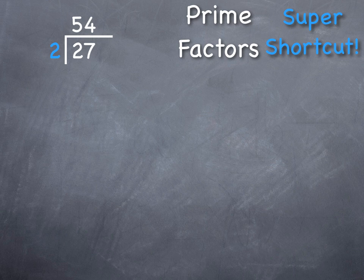And then what I'm going to do is ask myself, does 2 go into 27 again? If it does not, then I go to the next prime number, 3.